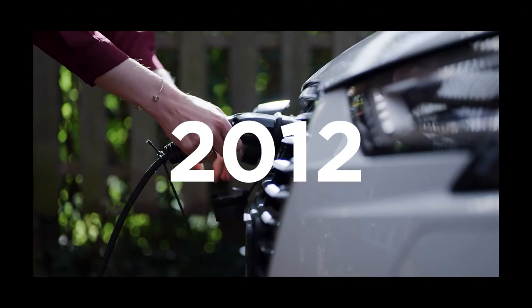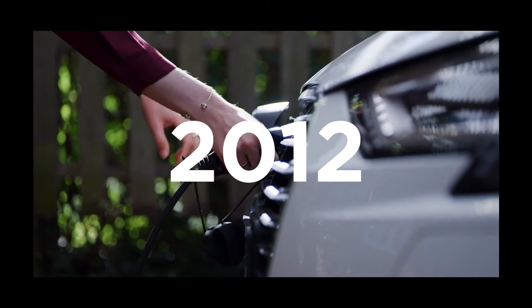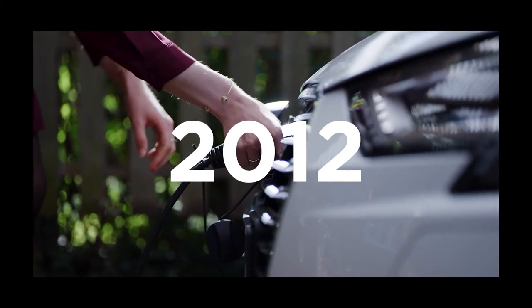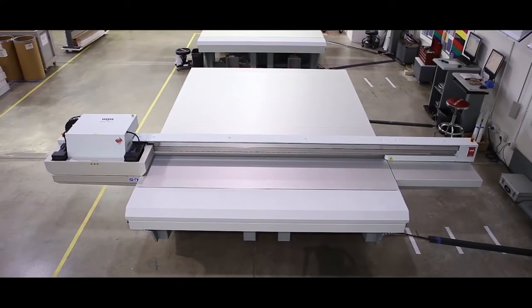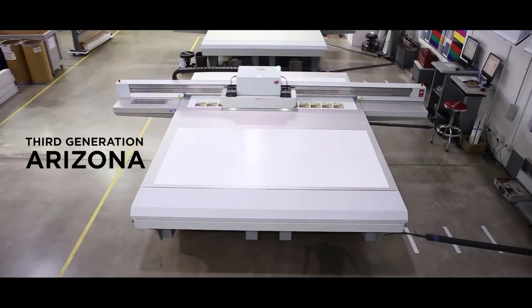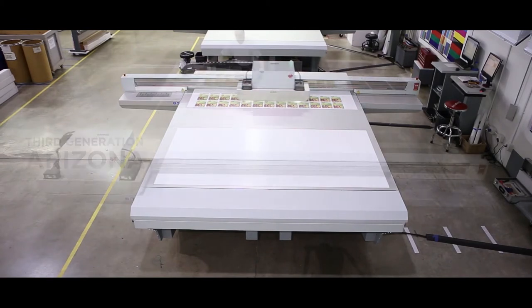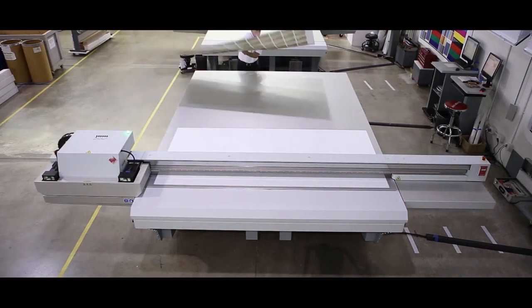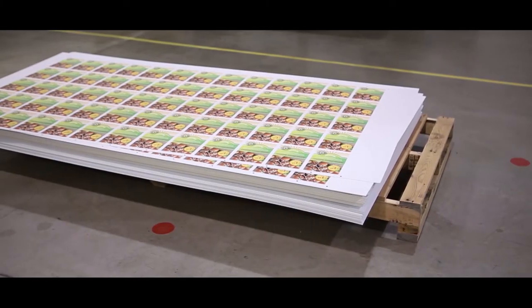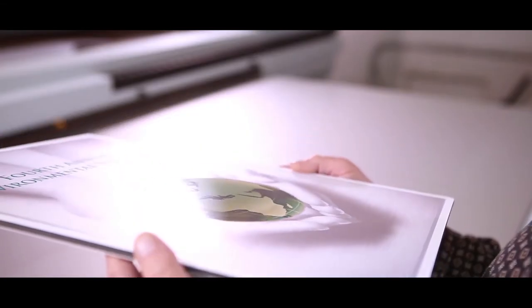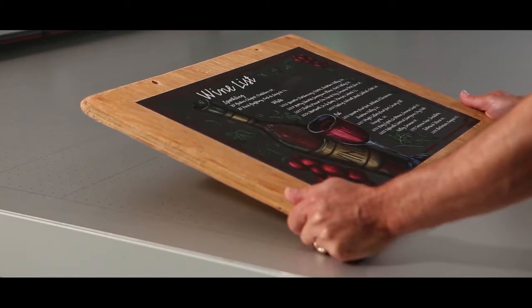Moving on to 2012, the first commercially available electric car was introduced to the world, changing the way we look at mobility. The improvements introduced in the third generation of Arizona flatbed printers pushed accuracy and flexibility to new heights, enabling razor-sharp prints over and over again. The added varnish ink channel completed the modular setup for Arizona printers.